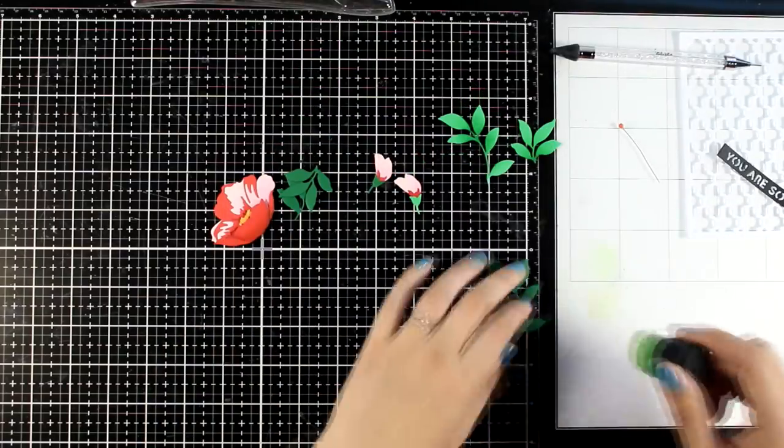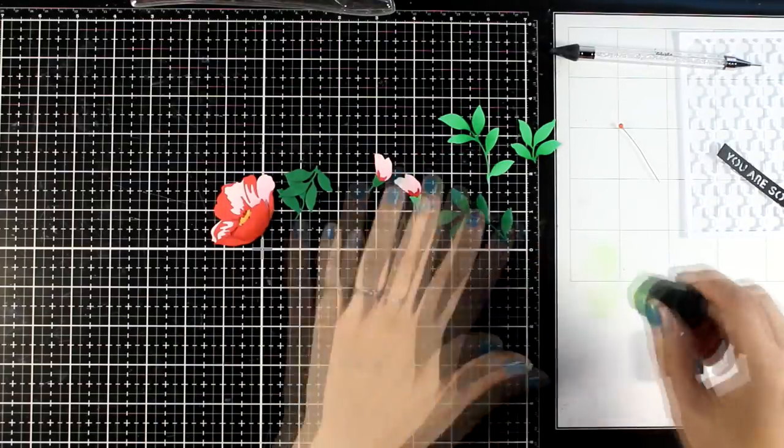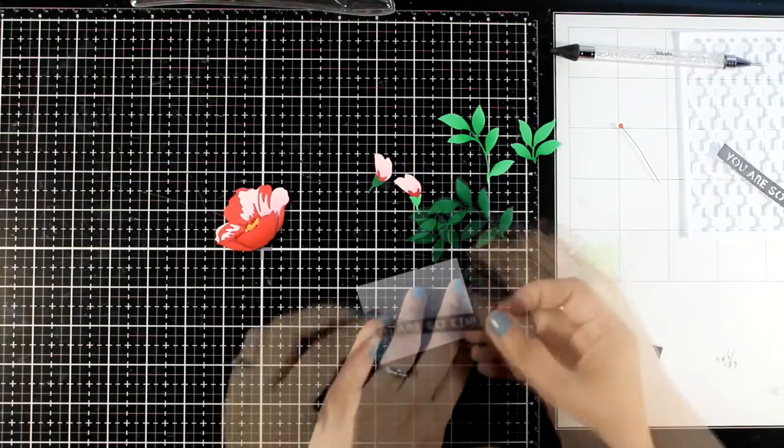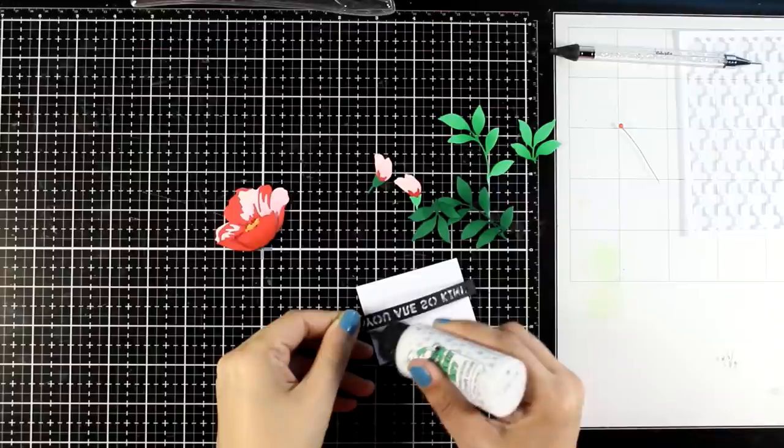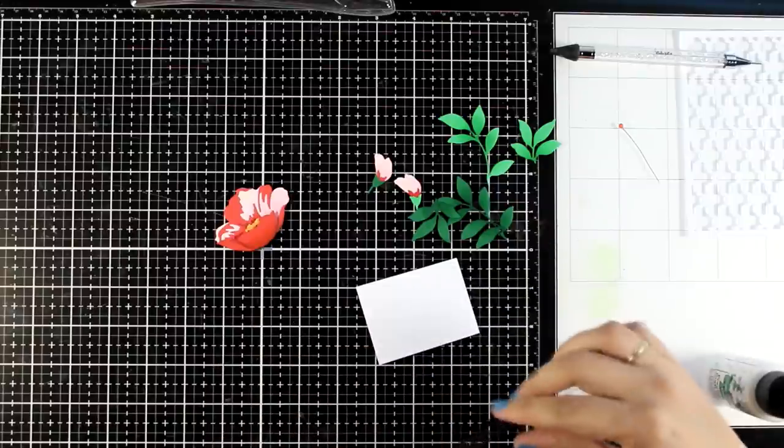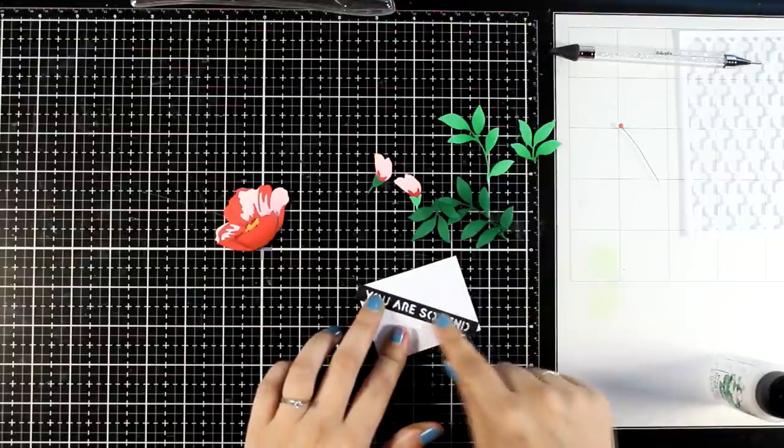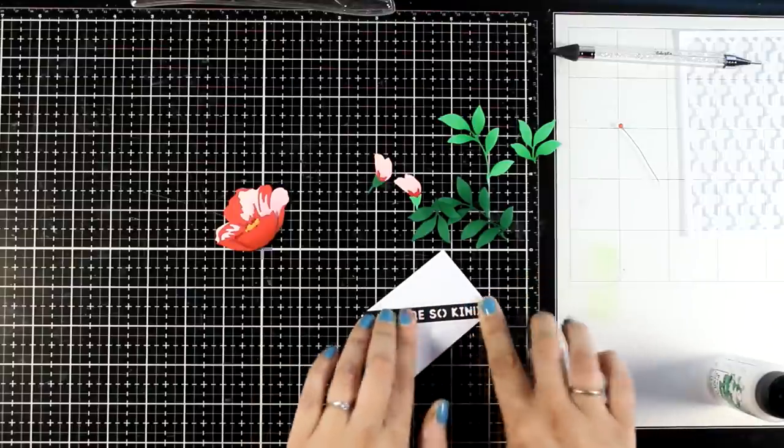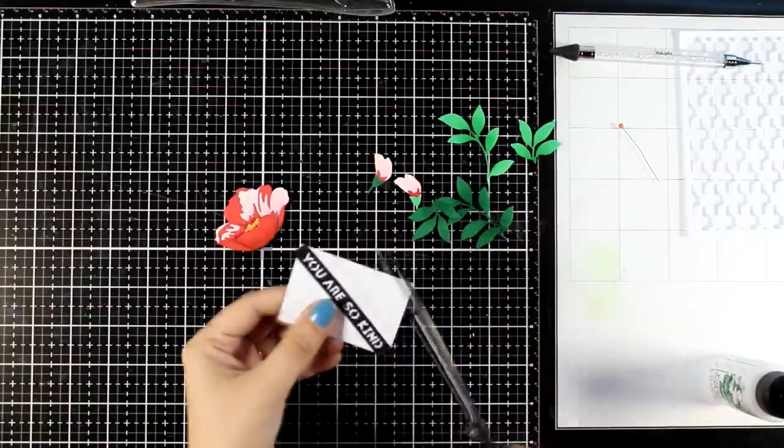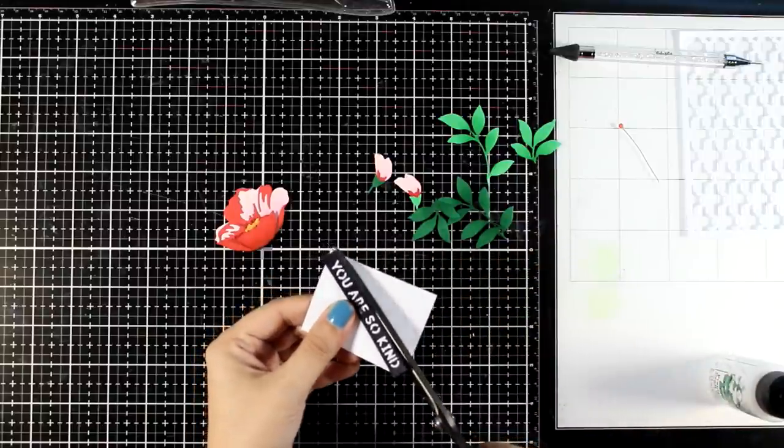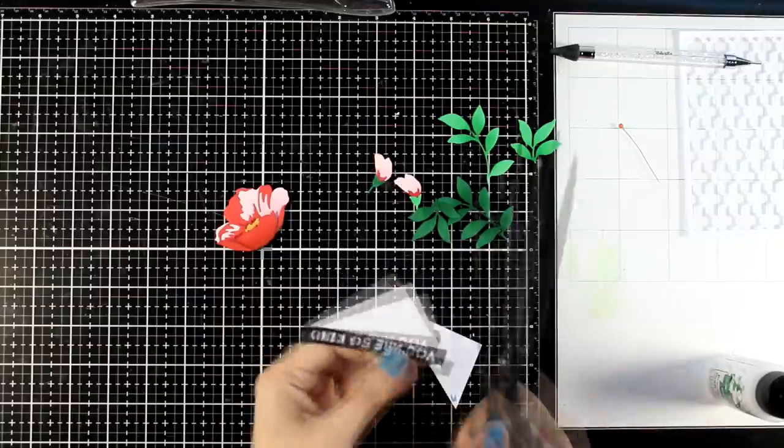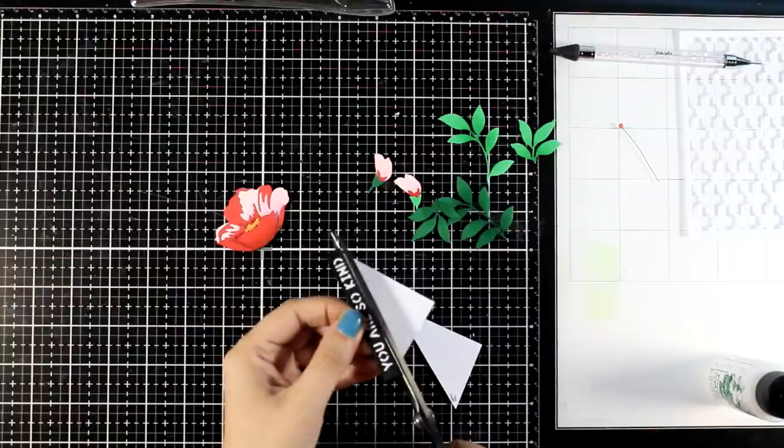So I created a big flower, a couple of buds and I also cut out lots of leaves. For my sentiment I went with one that is included in the Essential Sentiment Strip die set. This is definitely one of my favorites. I keep on using sentiments from this set again and again. So in this case I went with the one that says you are so kind. I cut it out from a black cardstock and then at the back I'm just adding a scrap piece of white cardstock so that the words are readable.